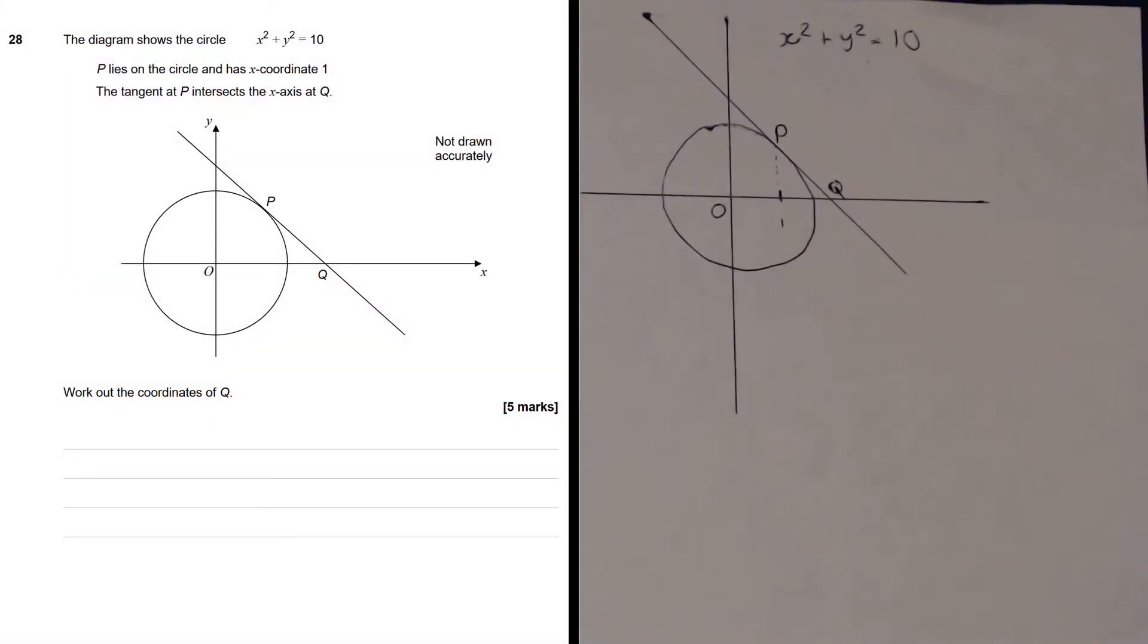In question 28 we are given the diagram of the circle x squared plus y squared equals 10. That's the equation of a circle that is centered at the origin and has radius square root 10.